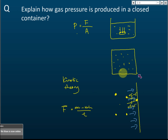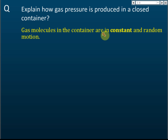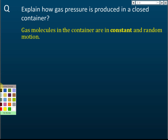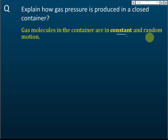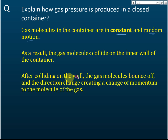For the exam, you need to explain this in a systematic way. First, state that gas molecules in the container are in constant and random motion — this is key and comes directly from kinetic theory. Second, as a result, the gas molecules collide on the inner wall of the container. Third, after colliding, the gas molecules bounce off and change direction, creating a change of momentum.